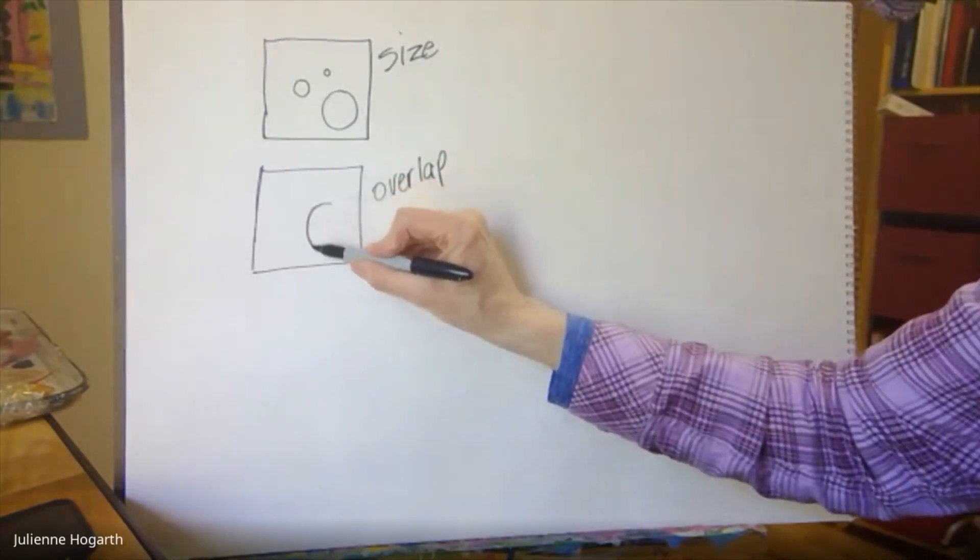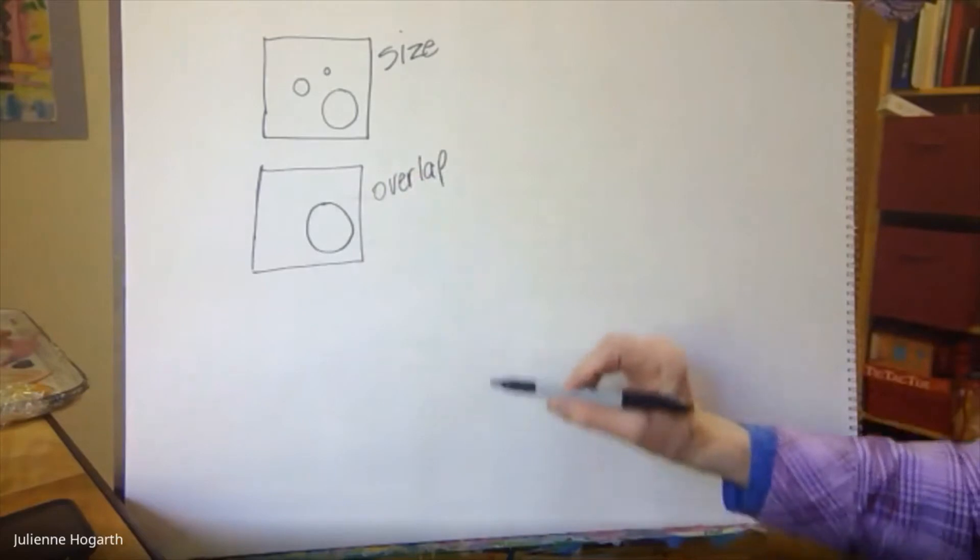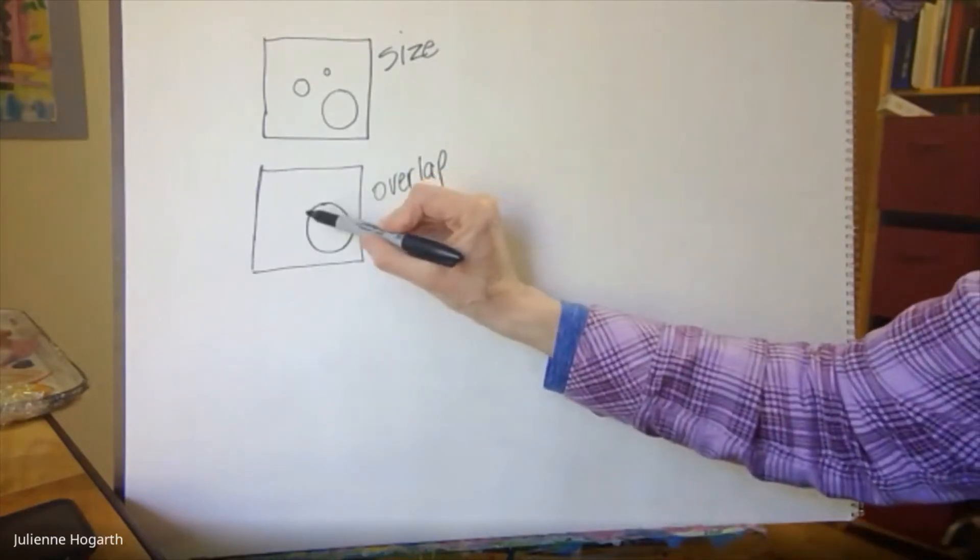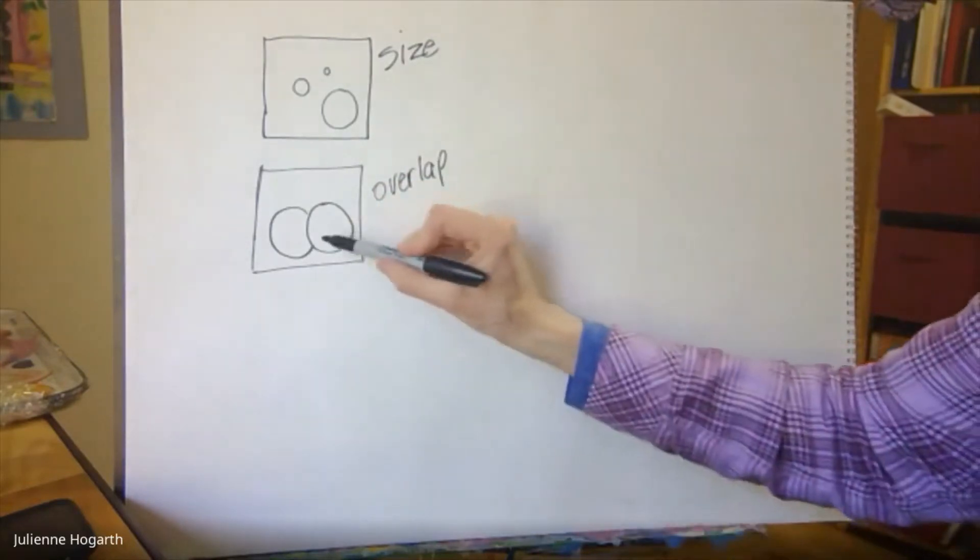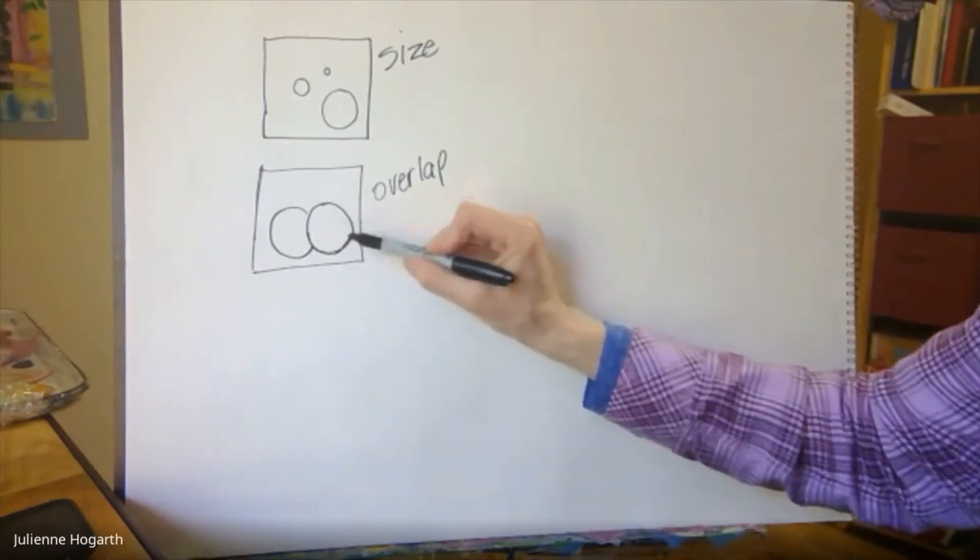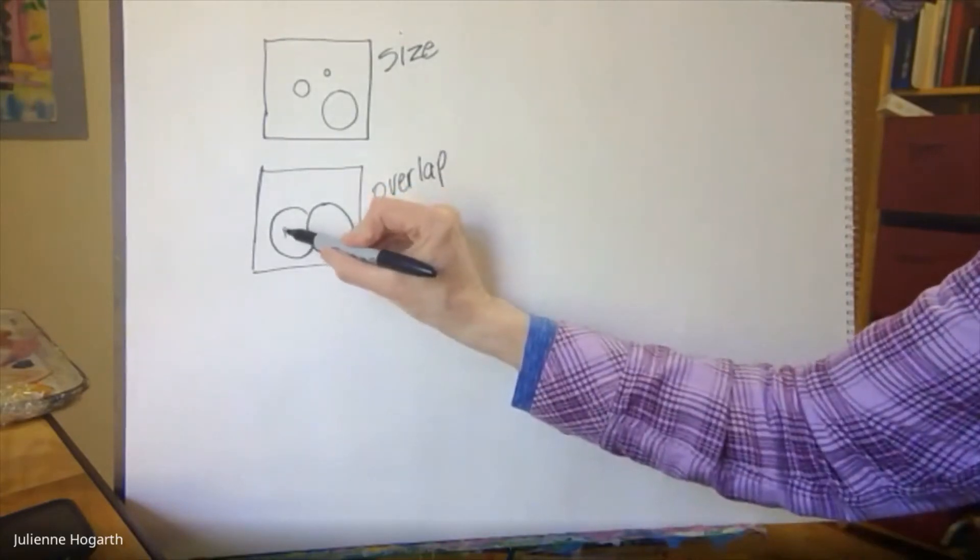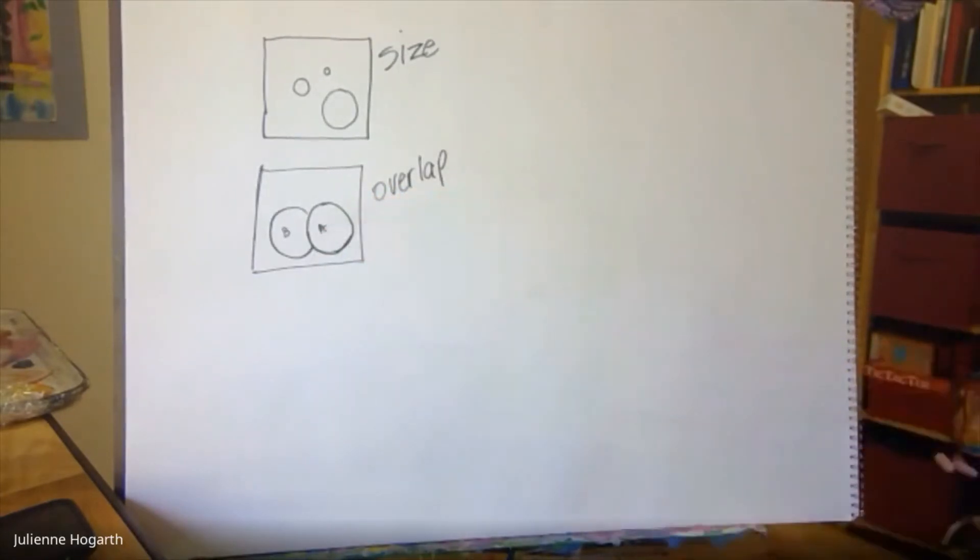So I have a ball and one dog goes and gets it. I like the dog illustration. And he sets it down and it's nice and close. And then my other dog gets the other ball and sets it down next to it. Which ball is closer? B dog ball or A ball.